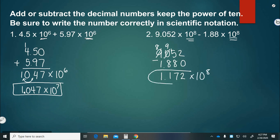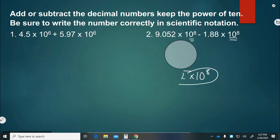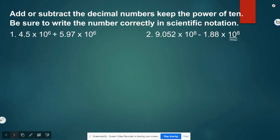And no need to rewrite it in this case because we only have one digit to the left of the decimal. All right. So those ones are really simple because they have the same power of 10. So you're going to try the next two on your own.